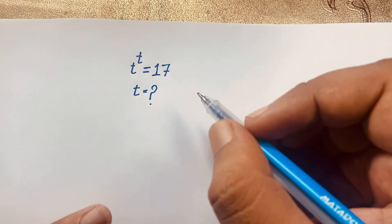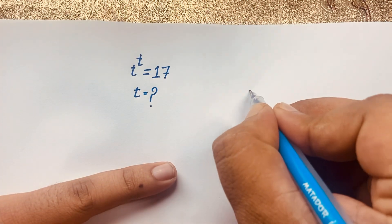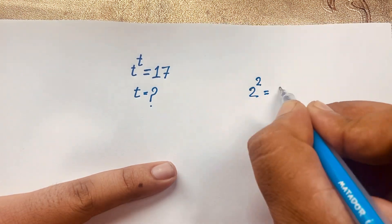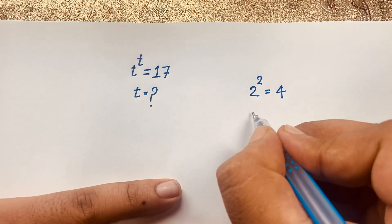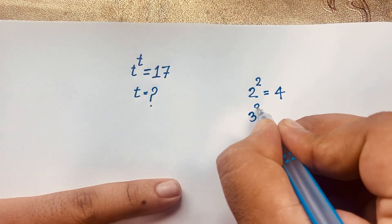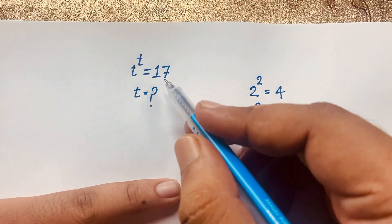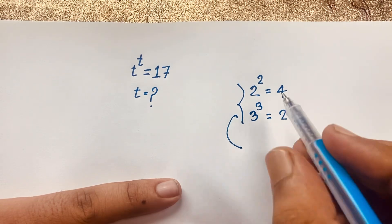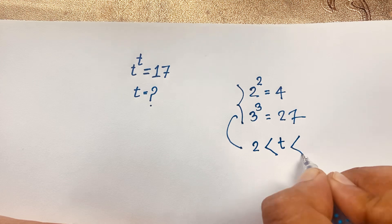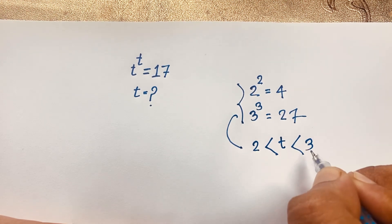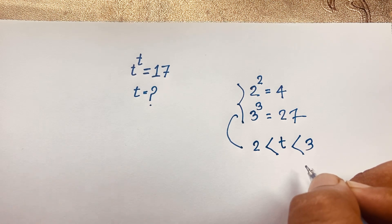First, if you think t is equal to 2, then 2 to the power 2 is equal to 4 — it is not 17. If you think t is equal to 3, then t to the power 3 is 27 — also not 17. So you can see t is less than 3 and greater than 2.